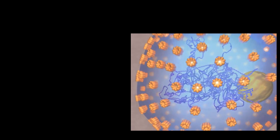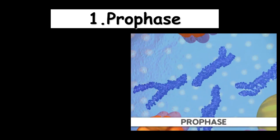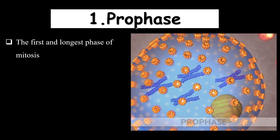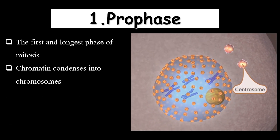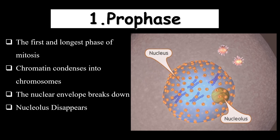Prophase is the first and longest phase of mitosis, in which the chromosomes start to condense. As already explained, the chromosomes are present in loosely packed form known as chromatin. In prophase, the chromatin starts to condense and develops into chromosomes. The nuclear envelope breaks down, the nucleolus disappears, and the centrosomes — located near the nucleus — start separating towards the opposite poles. Prophase is divided into two sub-phases: early prophase and late prophase.